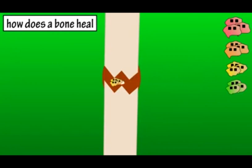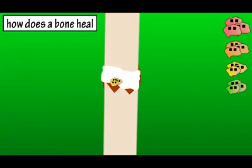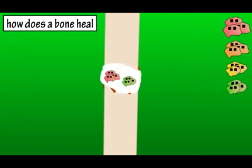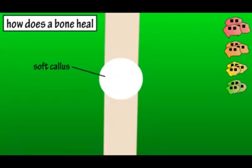A fibrocartilaginous tissue is formed by the chondroblasts, which holds the broken ends together. The osteoblasts and fibroblasts also begin their work at this time as well. This fibrocartilaginous tissue that is formed is called a soft callus.